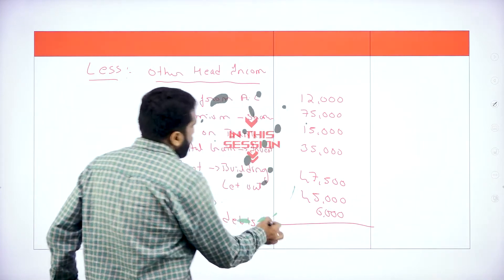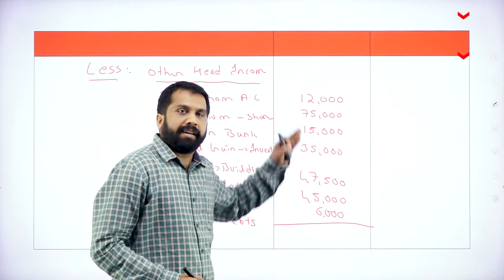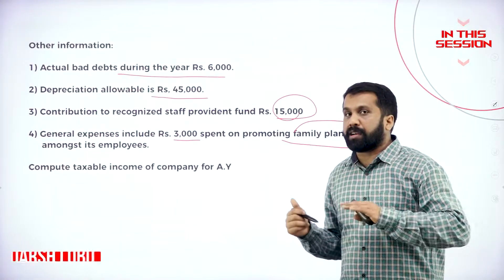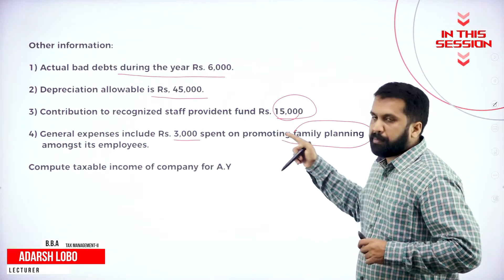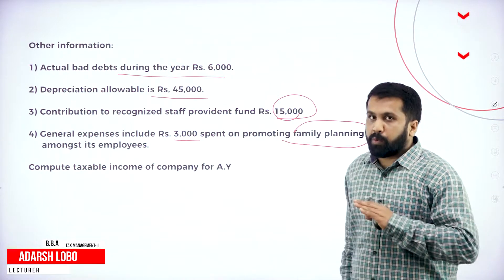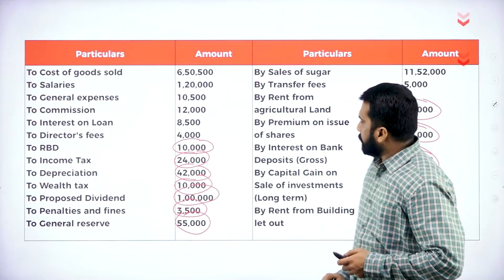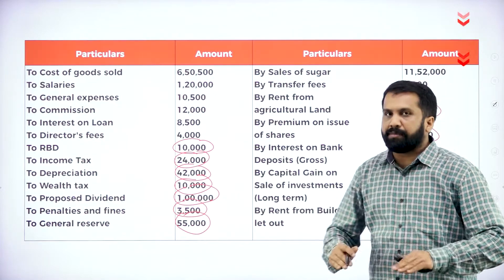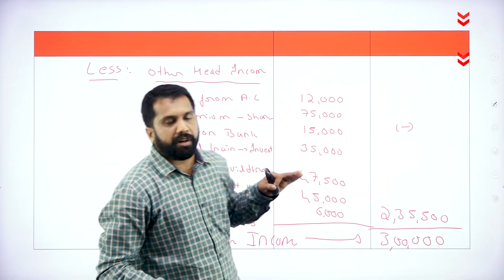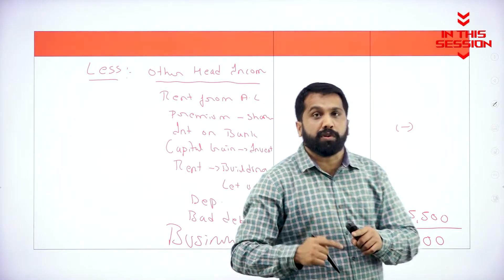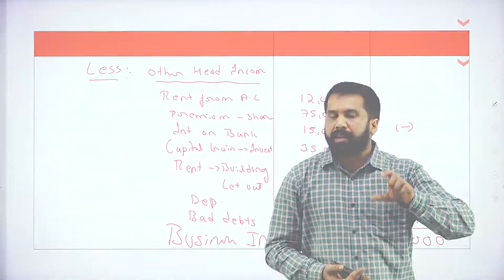Whatever comes under adjustment, every time it comes under other head items only. This will not come under disallowed. Remember, even though the 3,000 belongs to family planning, it will not come under disallowed. Add all the items, minus all the items. You are done with your business income. Once you are done with your business income, you are supposed to go for total income.